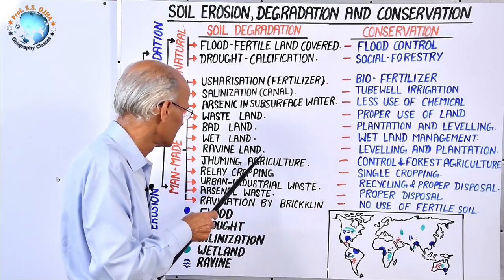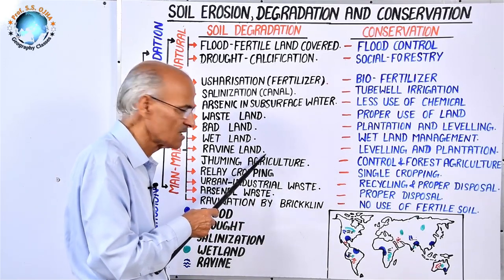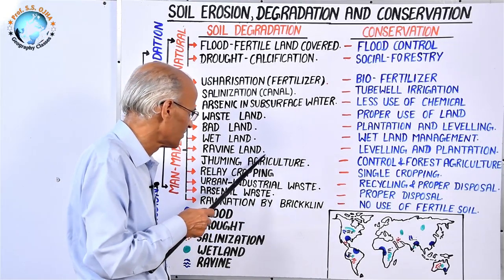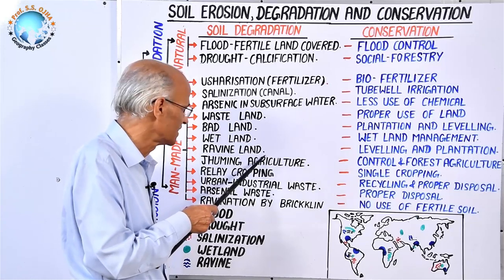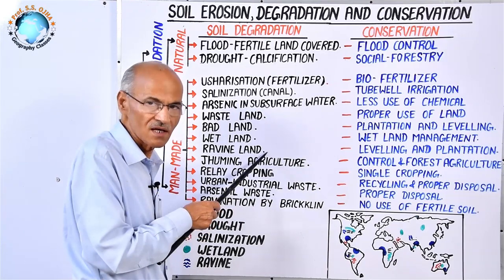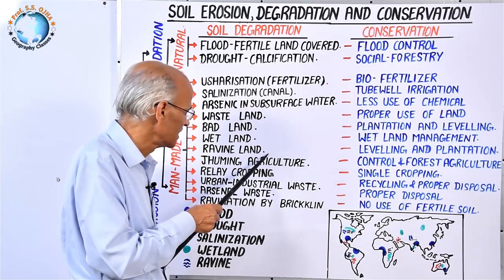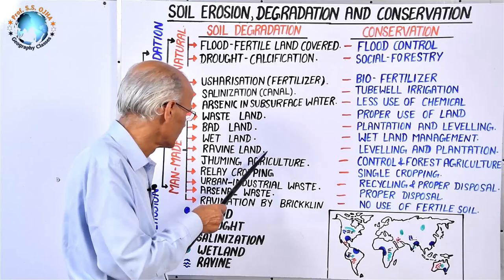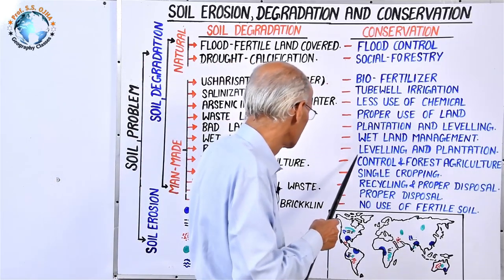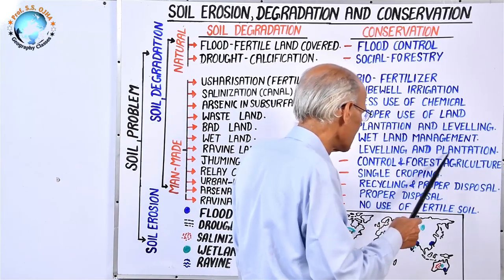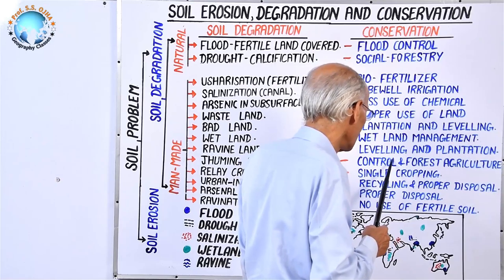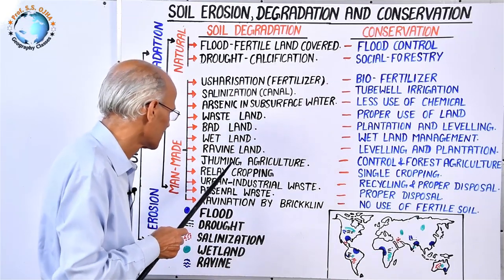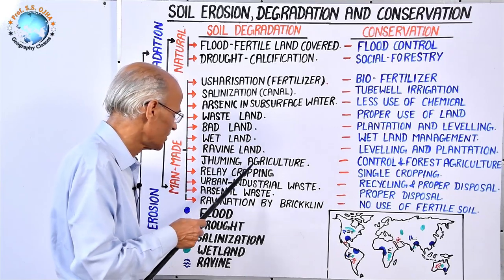Next is ravine land — land where there are rills and gullies. Although naturally occurring, sometimes people leave land in the hands of nature and ravination processes occur, like along the northern margin of the Indian plateau and the western margin of the Western Ghats. To protect fertile soil from ravination, leveling and plantation practices are necessary. When land is leveled and plantation is done, soil is protected from this ravination process.